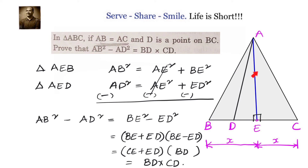We applied Pythagoras theorem on triangle AEB and triangle AED. We get AB squared equals AE squared plus BE squared, and AD squared equals AE squared plus DE squared. Subtracting one from the other gives BE squared minus ED squared, which factors as BE plus ED into BE minus ED. We changed BE to CE since both are equal, so CE plus ED is CD and BE minus ED is BD. Therefore AB squared minus AD squared equals BD into CD.